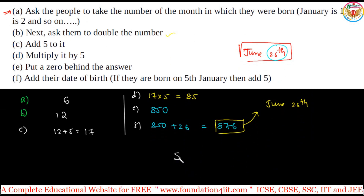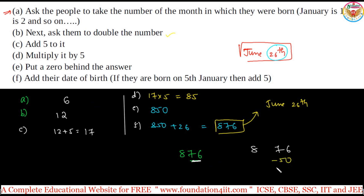Here is the secret. Take the number 876. Mentally subtract 50 from the last two digits: 76 minus 50 equals 26 — that is the date. Then from the remaining digits, subtract 2. The remaining digit is 8; subtract 2 to get 6. So the month is 6, which is June. Therefore the answer is June 26th.